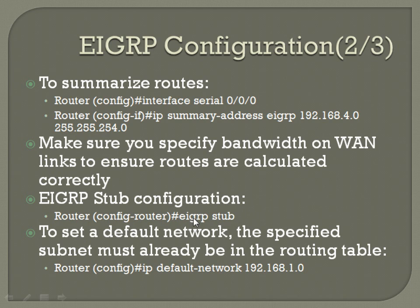If you need to set a default network, the specified subnet must already be in the routing table. The command is 'ip default-network 192.168.1.0' in this case.